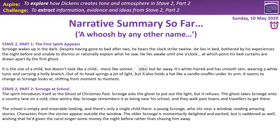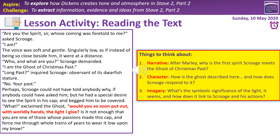We have the previous lesson's summary in terms of the narrative we worked through, set up for today's session. Feel free to use it or skip it. Now, some extract annotation. On the left-hand side we have a section of the text, and on the right-hand side three prompts — one narrative, one character-driven, and one imagery-based. Read through the text, use the yellow box prompts to help you annotate, make notes however works for you, then press play and I'll work through some answers.